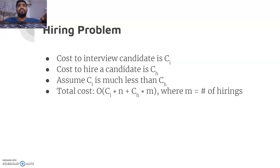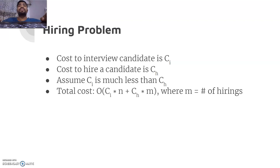What are the costs associated with this problem? There are two types: the interviewing cost c_i, and the hiring cost c_h. Interviewing is a light process so its cost is less, but hiring involves firing the old employee - we must handle his accounting, pay his salary since we are removing him, and train the new employee. So the total cost is c_i × n plus c_h × m, where m is the number of hirings.